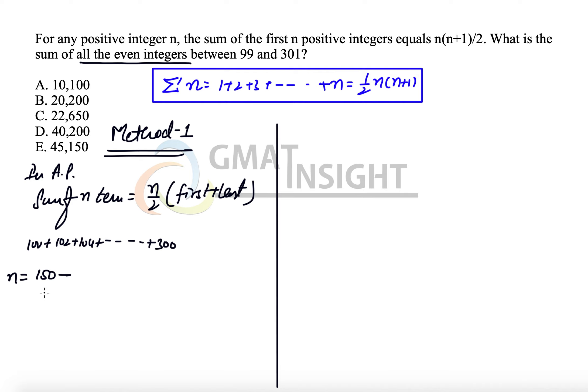From 1 to 98, there are half even numbers, that means 49. So the number of terms that we have here will be equal to 101.